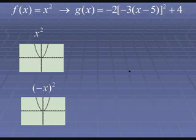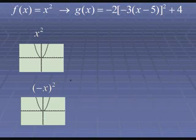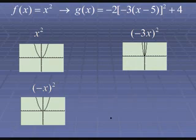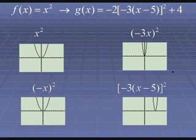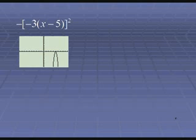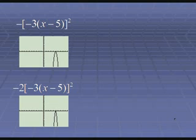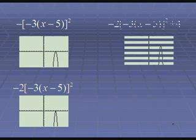Looking at that parabola example step by step: first, the negative on x would reflect it horizontally, but negative x all squared equals x squared — so flipping a parabola horizontally doesn't change it. The 3 inside compresses it horizontally by 1/3. The minus 5 moves it right 5. The negative out front flips it vertically across the x-axis. The 2 stretches it further vertically. And the 4 moves it up 4. So you went from x squared to this transformed graph.